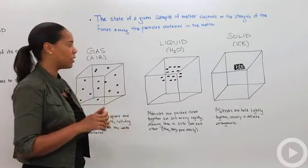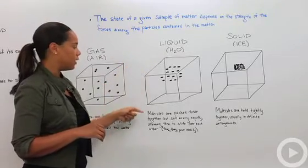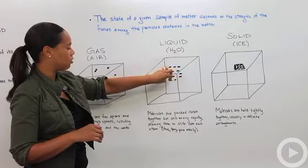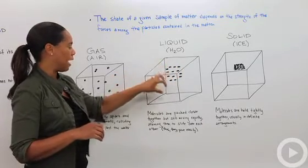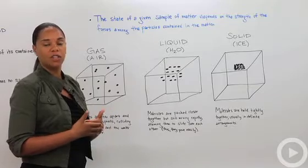When it becomes a liquid, say water, then the molecules become packed closer together. They're still moving rapidly, which allows them to slide over each other. That's why liquids pour easily.